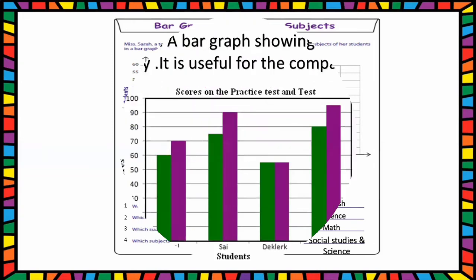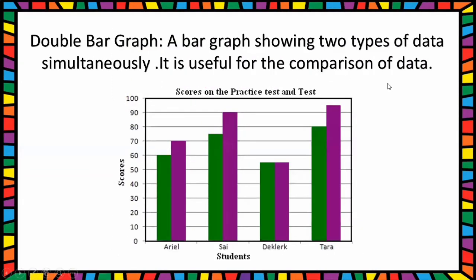Next is double bar graph. A bar graph showing two types of data simultaneously. It is useful for the comparison of data. See one example.